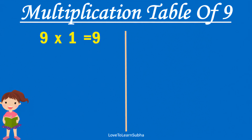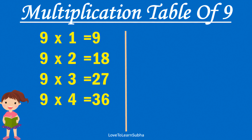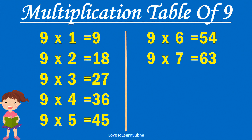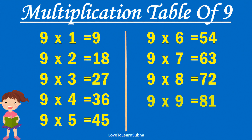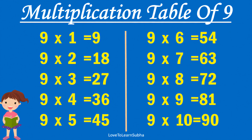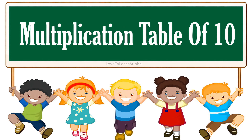Multiplication table of 9. 9×1 is 9, 9×2 is 18, 9×3 is 27, 9×4 is 36, 9×5 is 45, 9×6 is 54, 9×7 is 63, 9×8 is 72, 9×9 is 81, 9×10 is 90.